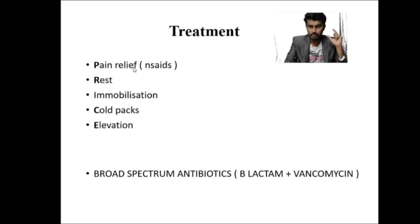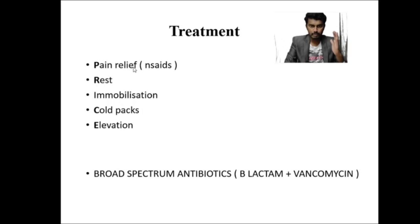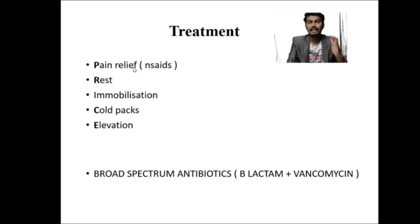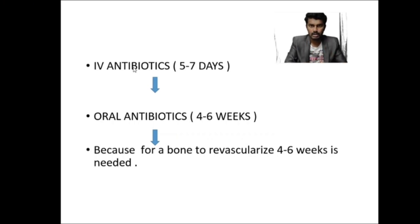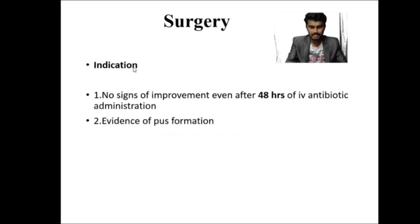Treatment follows the PRICE mnemonic: Pain relief (analgesics), Rest, Immobilization, Cold packs, and Elevation (reduces venous congestion and improves drainage). Broad spectrum antibiotics should be started immediately at presentation without waiting for blood culture or sensitivity reports — start empirical antibiotics, then adjust based on sensitivity. Initially IV antibiotics are given for a minimum of five to seven days, then converted to oral antibiotics, continuing for a total of four to six weeks. Minimum six weeks is required for bone revascularization.